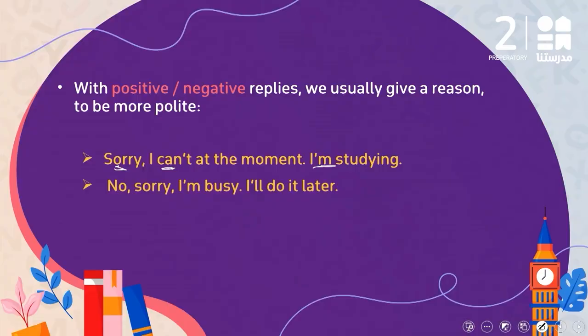We can still say 'No, sorry, I'm busy. I'll do it later.' So we say no, then apologize by saying sorry, then give the reason — 'I'm busy, I can't do it' — and then use 'will' for the future: 'I'll do it later.' Here 'I'll' is a contraction, standing for 'I will.'